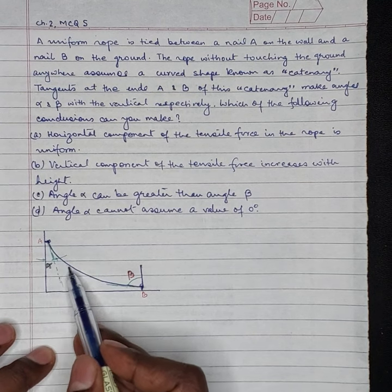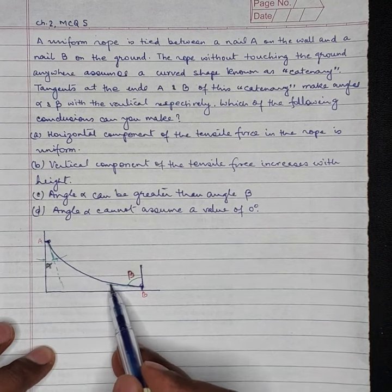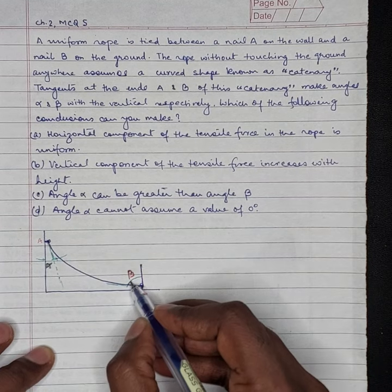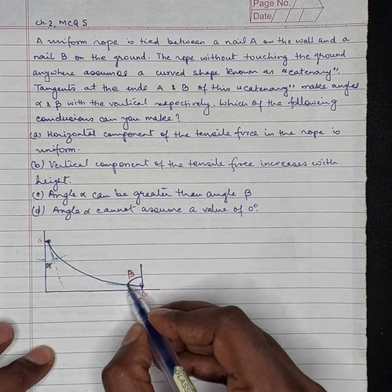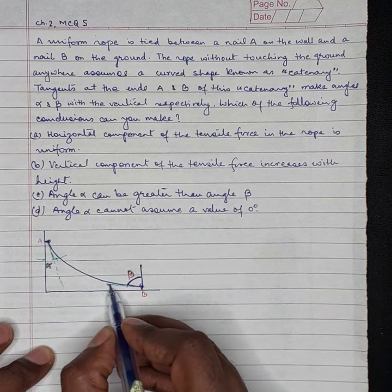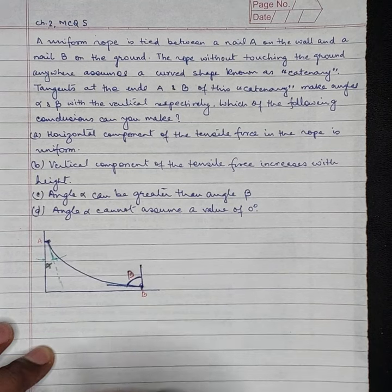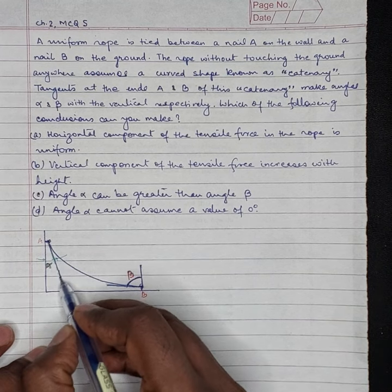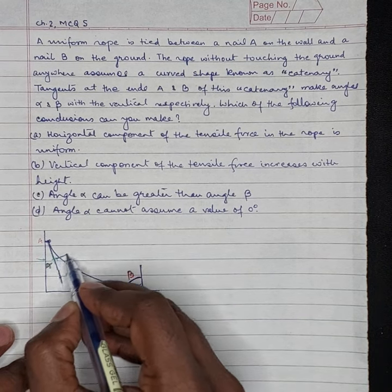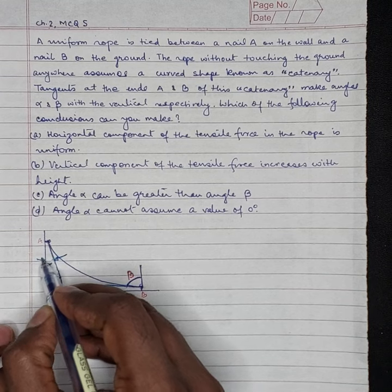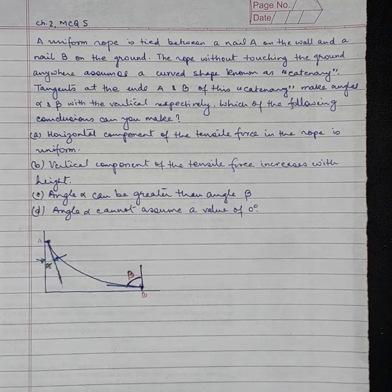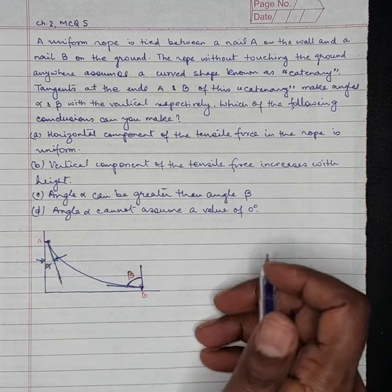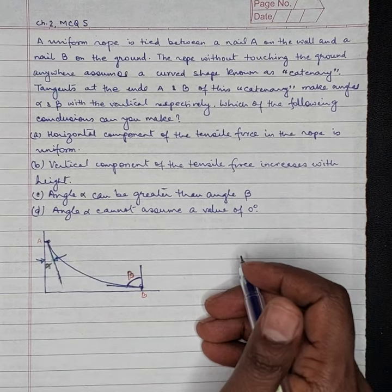So this is the catenary shape. This angle is beta. This angle is alpha. So let us try to solve this question.